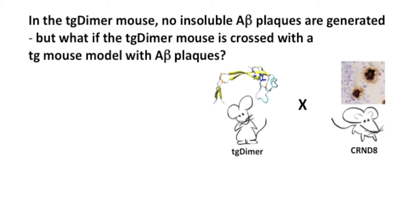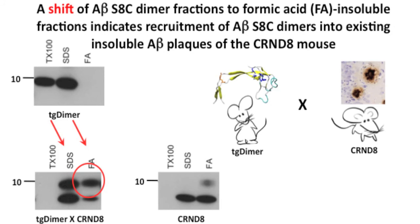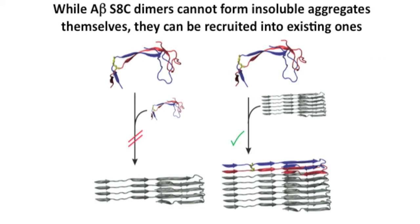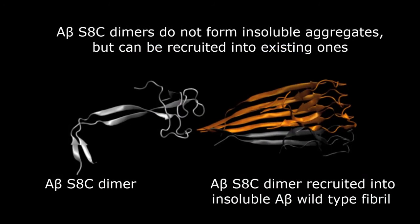We then investigated whether the A-beta dimers that themselves are unable to initiate insoluble A-beta aggregates and plaques could be recruited into existing insoluble A-beta plaques. We crossed TG dimer mice to CRND8 mice and purified insoluble A-beta from the progeny to find out whether they contained A-beta S8C. Indeed, we find that A-beta S8C dimers are recruited to insoluble A-beta generated from the CRND8 mouse transgene, indicating that A-beta S8C dimers are principally able to associate to plaques, even though not able to initiate the process spontaneously.